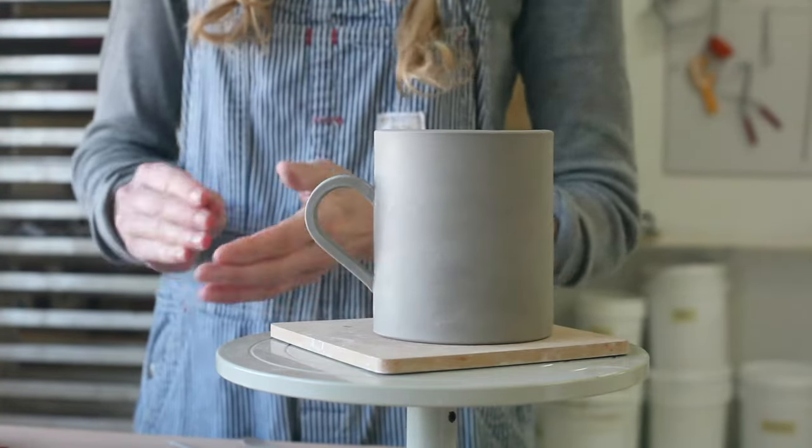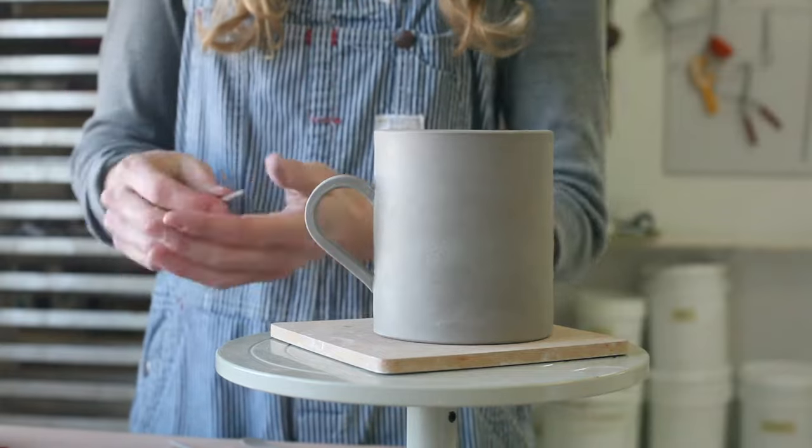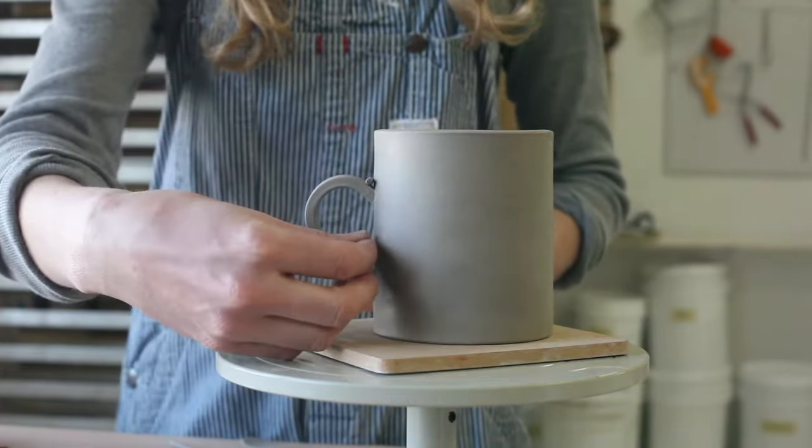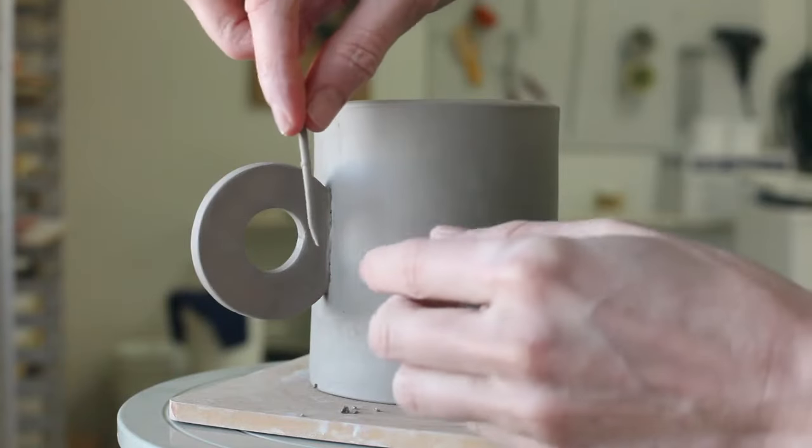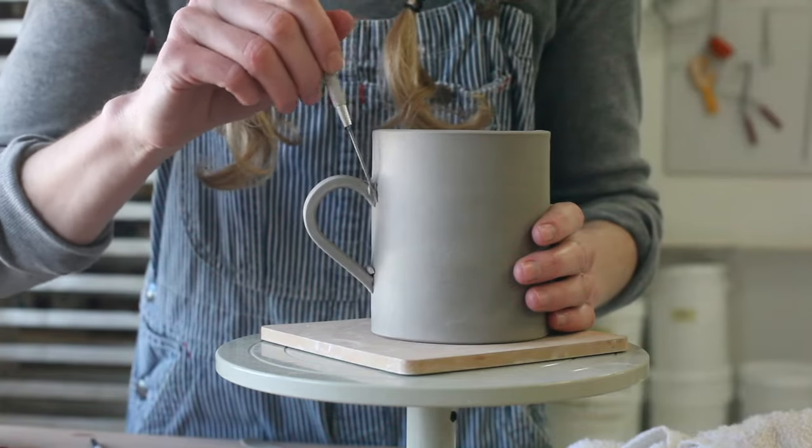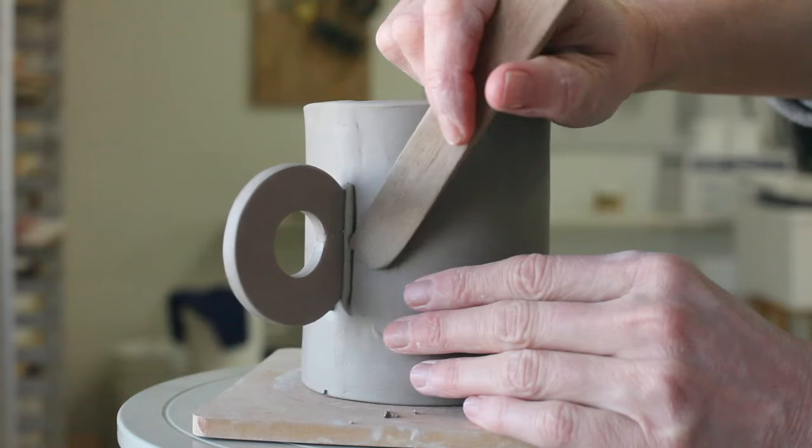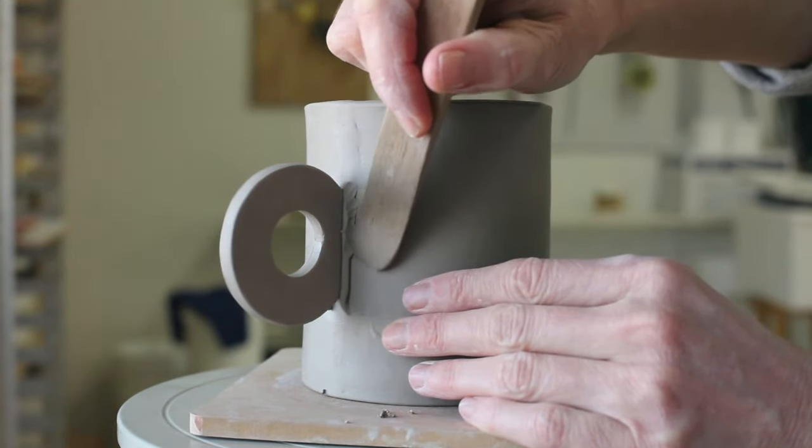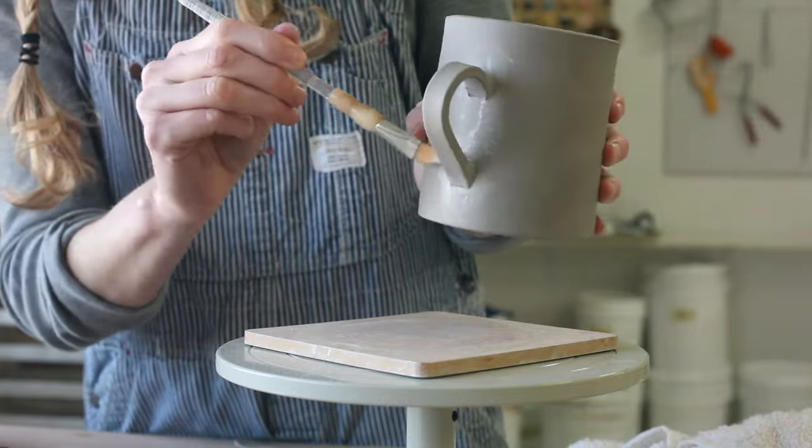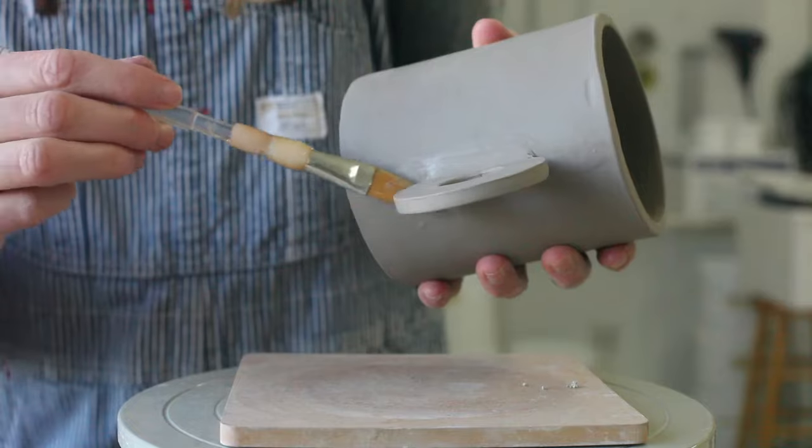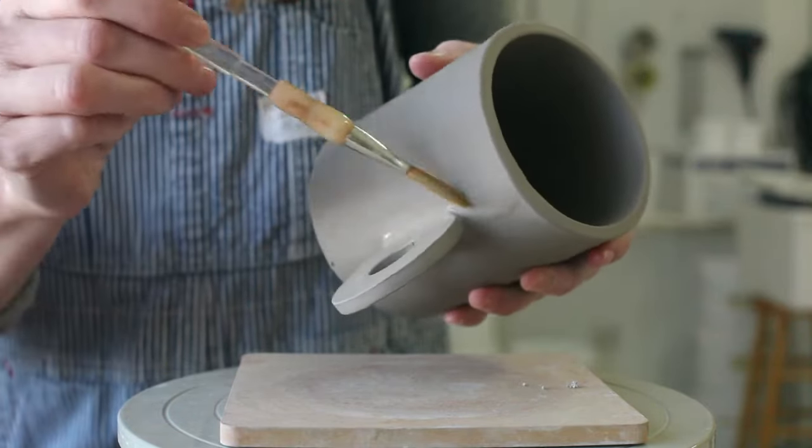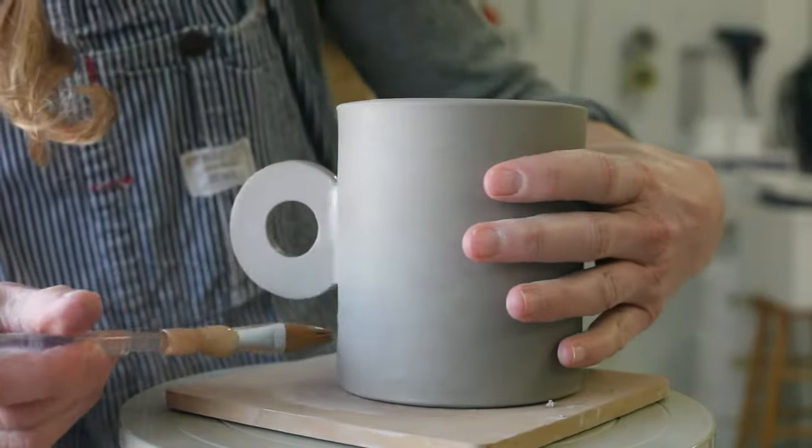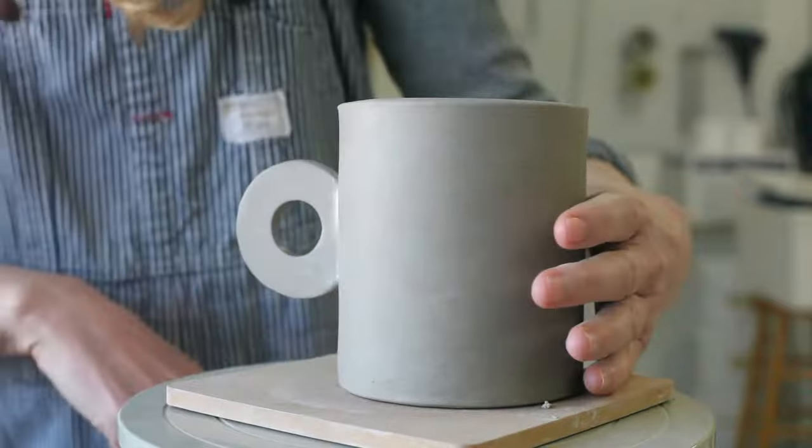Handles with smaller contact points will benefit from some more reinforcement. After attaching the handle, take a small coil of soft clay and blend around the attachment points. Find a tool that's the size you need to get in small spaces. Finish clean up with a paint brush. Taking time to add in this extra clay will greatly reduce cracking at the attachment points.